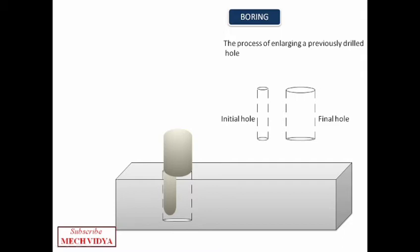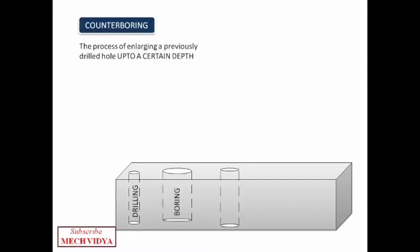The next operation is counter boring where we enlarge a hole up to a certain distance. That means we are not enlarging the entire hole. Let us concentrate on the third hole. Now the boring tool will start to rotate like this and the upper half of the hole will get enlarged due to this cutting action. This kind of holes are used to accommodate bolt heads like this.